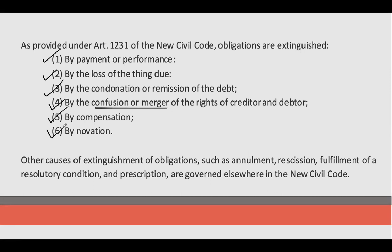The other causes of extinguishment of obligation such as annulment of the obligation, rescission, fulfillment of resolutory condition, and prescription are governed elsewhere in the new Civil Code. So our acronym, class, is P.